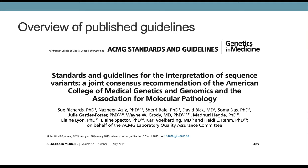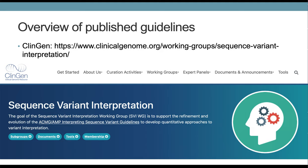Starting with the published guidelines, this 2015 paper is freely available and is a resource you should definitely read — and preferably have a copy close by — if you need to be doing classification of genetic variants. This is a set of recommendations from the American College of Medical Genetics and Genomics and the Association for Molecular Pathology. The remainder of what we'll discuss today comes from ClinGen, specifically the sequence variant interpretation page.